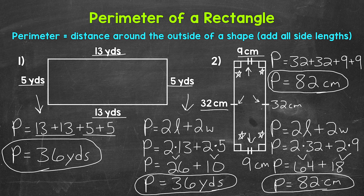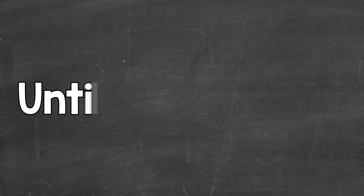Again, I used the longest side for the length in both examples. If we switch up the length and the width, we're still going to get the correct perimeter, so don't get too held up on which is the length and which is the width. If you want to keep it consistent, just go with the longest side for the length. So there you have it — that's how to find the perimeter of a rectangle. I hope that helped. Thanks so much for watching. Until next time, peace.